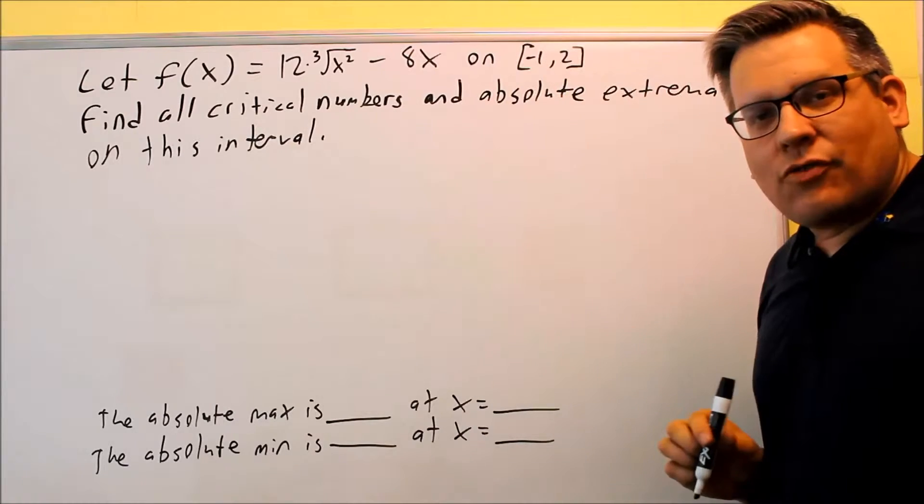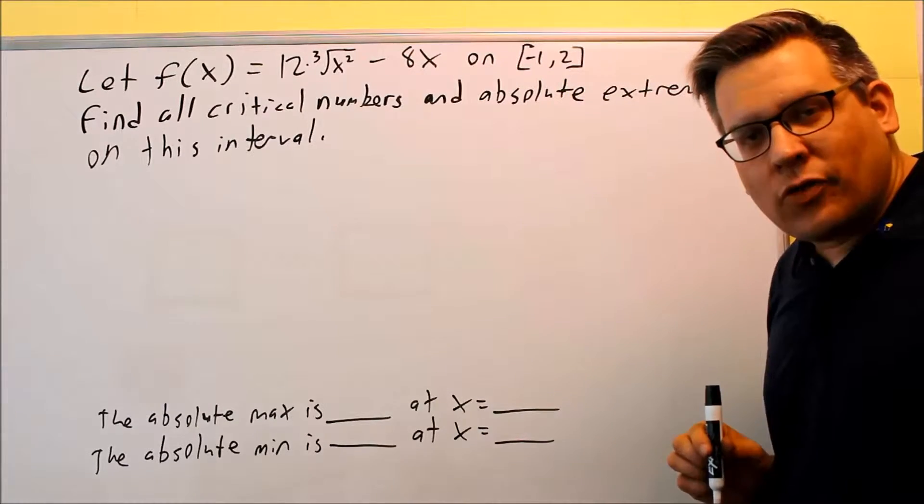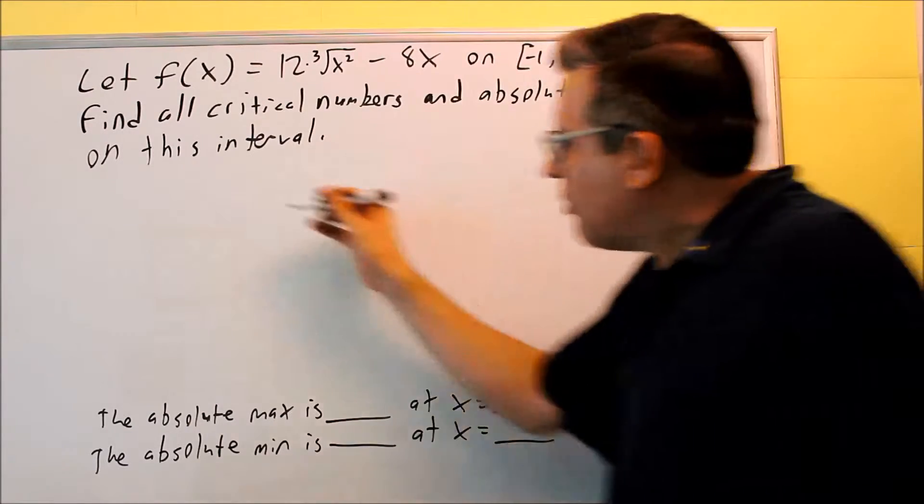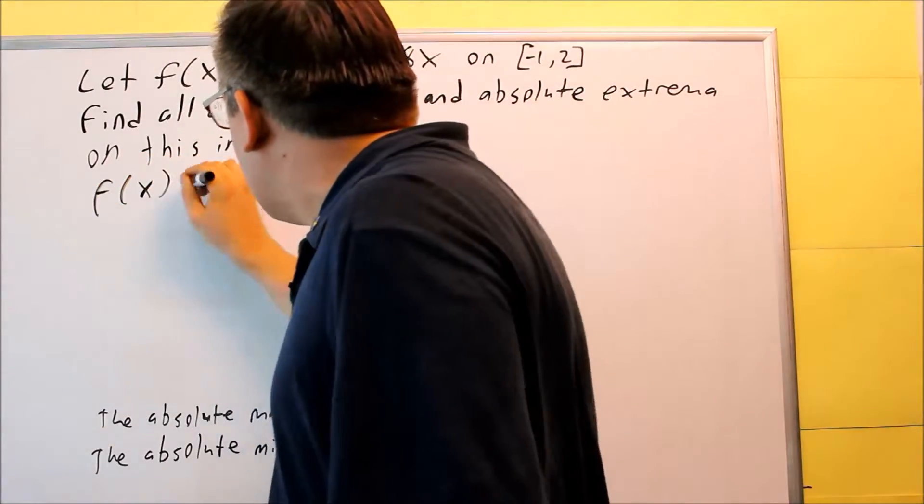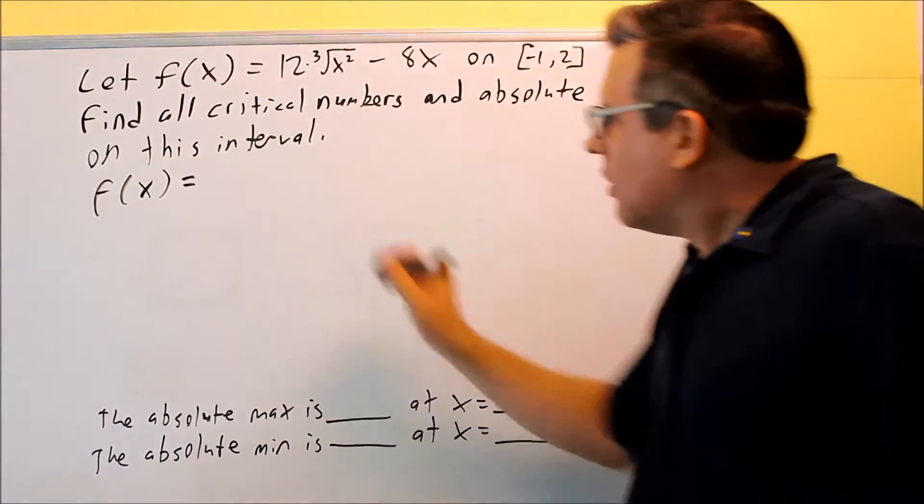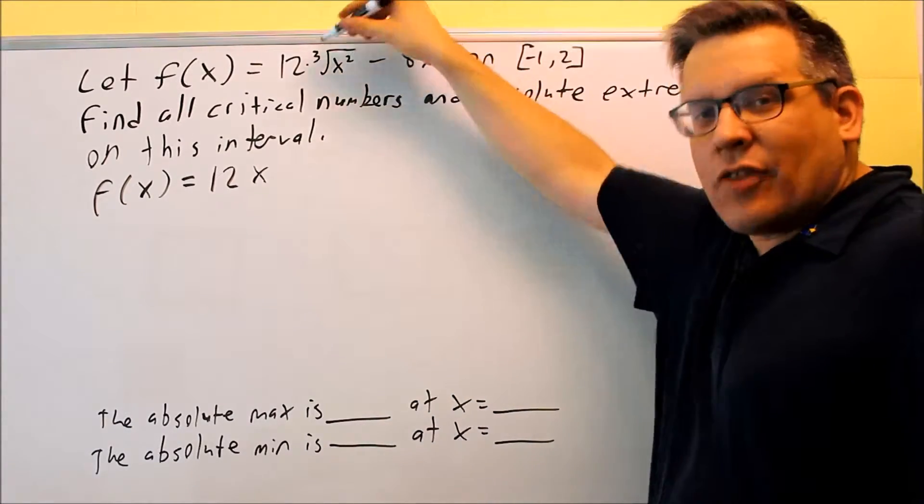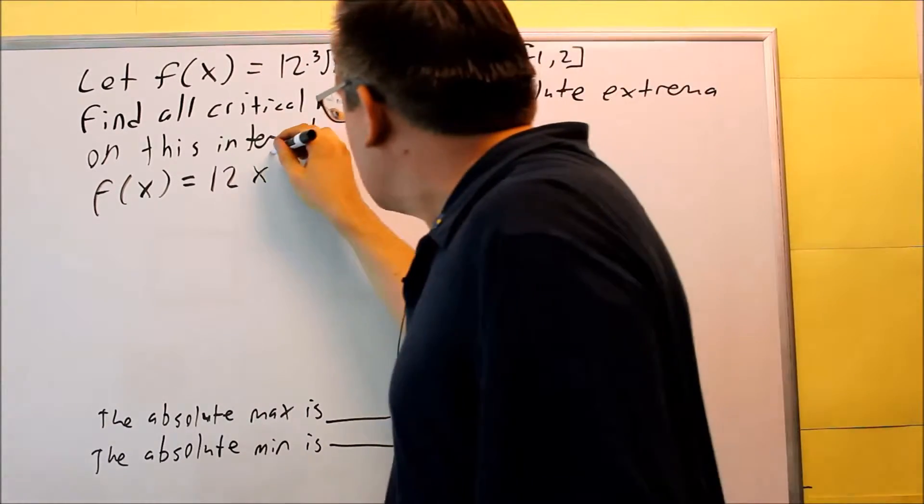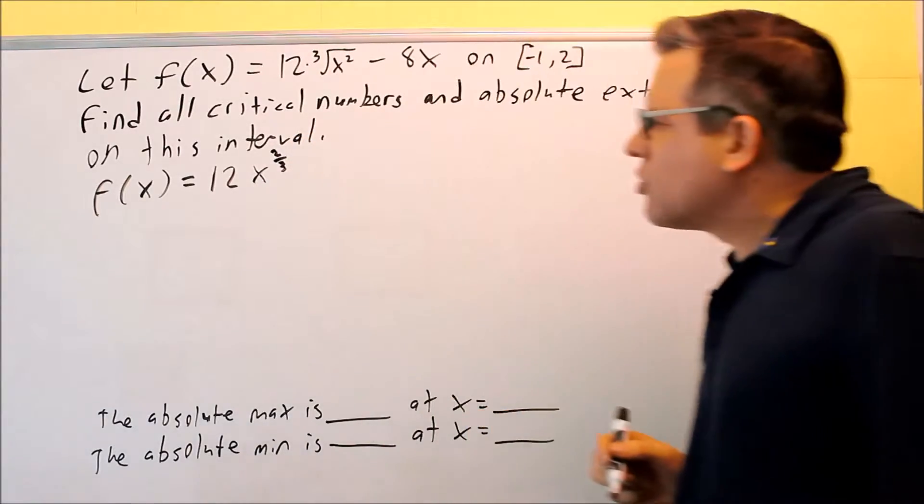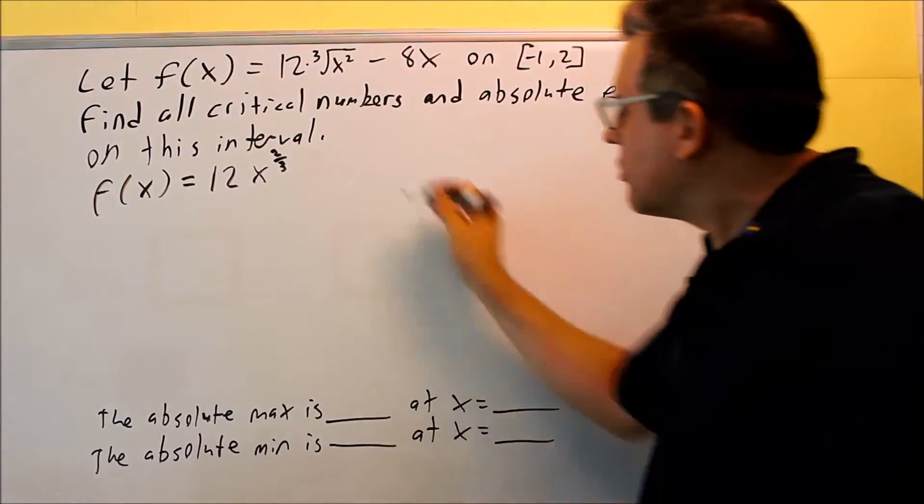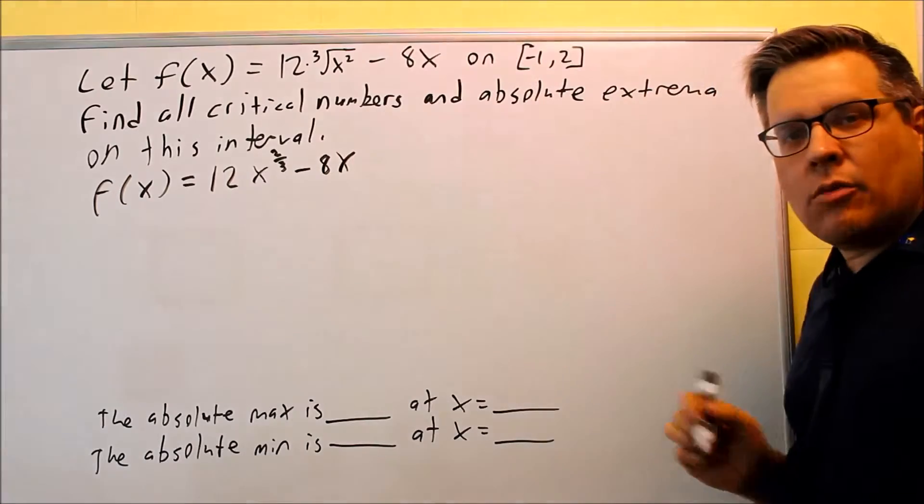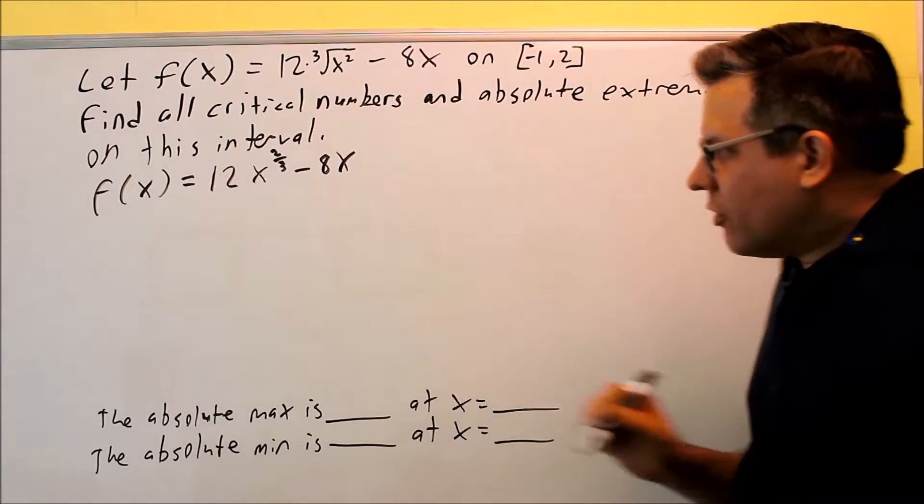For this process, the first thing you have to do is find the first derivative. Now before I do that, let me first rewrite this to make it easier to use with the power rule. This is going to be 12x to the 2/3 power, so 12x^(2/3) minus 8x. Writing it that way, it'll be easier to do the derivative.